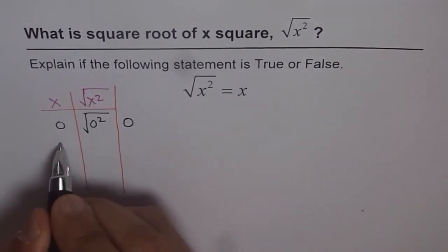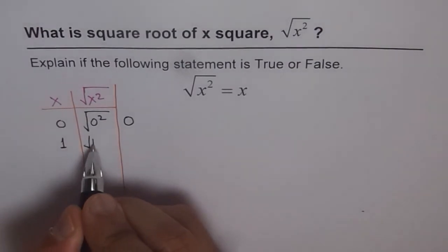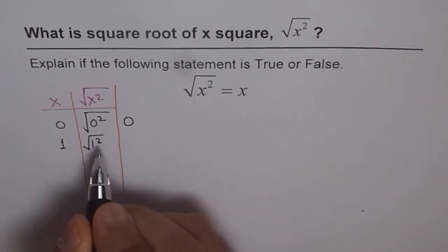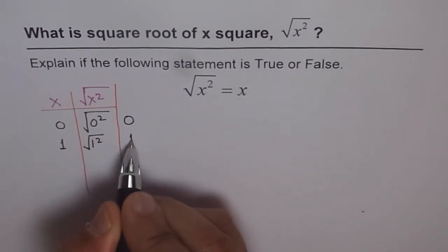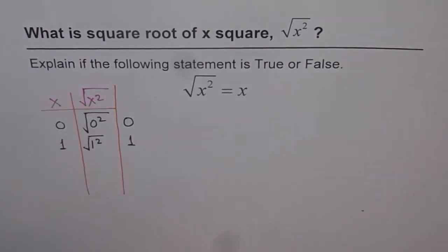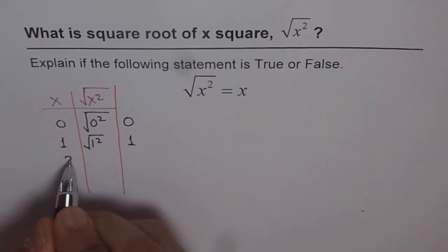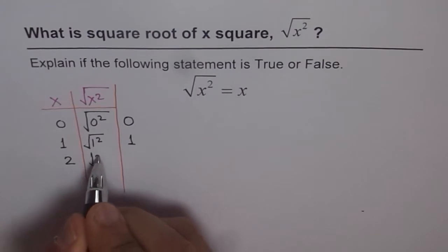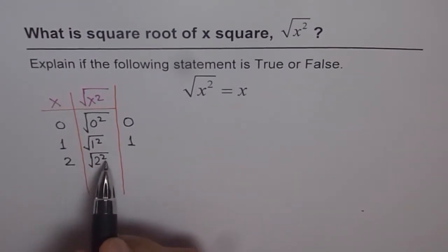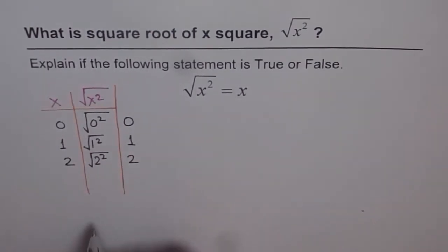Now, if I put 1 here, then what is square root of 1 square? It is 1 square is 1 and square root is 1. We get the same answer as x. How about 2? Square root of 2 square is 4 and square root of 4 is 2. That is perfect.